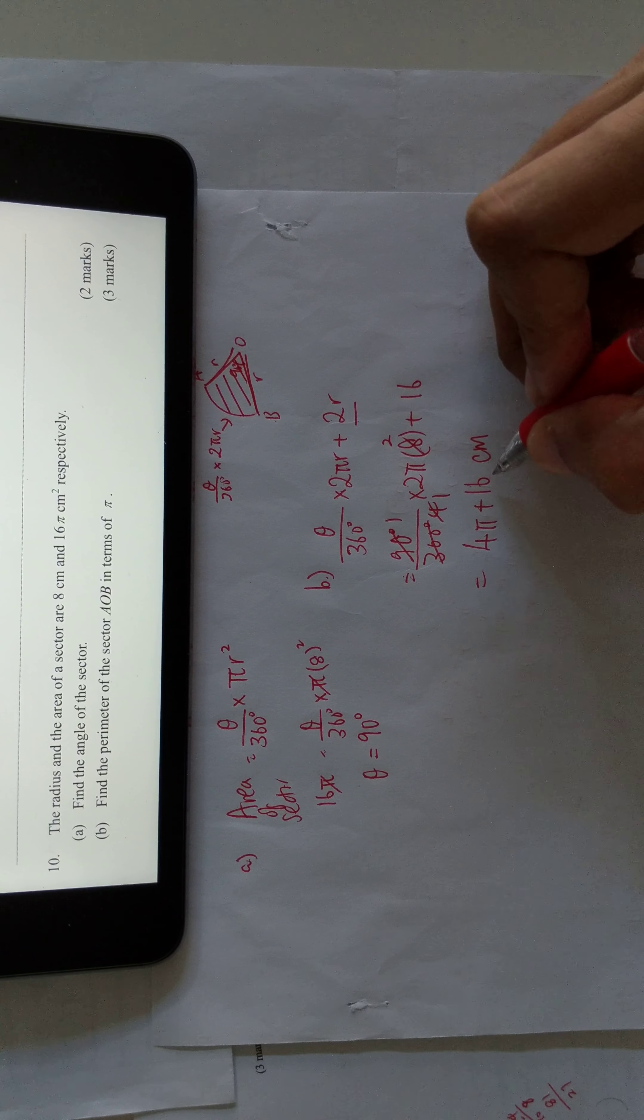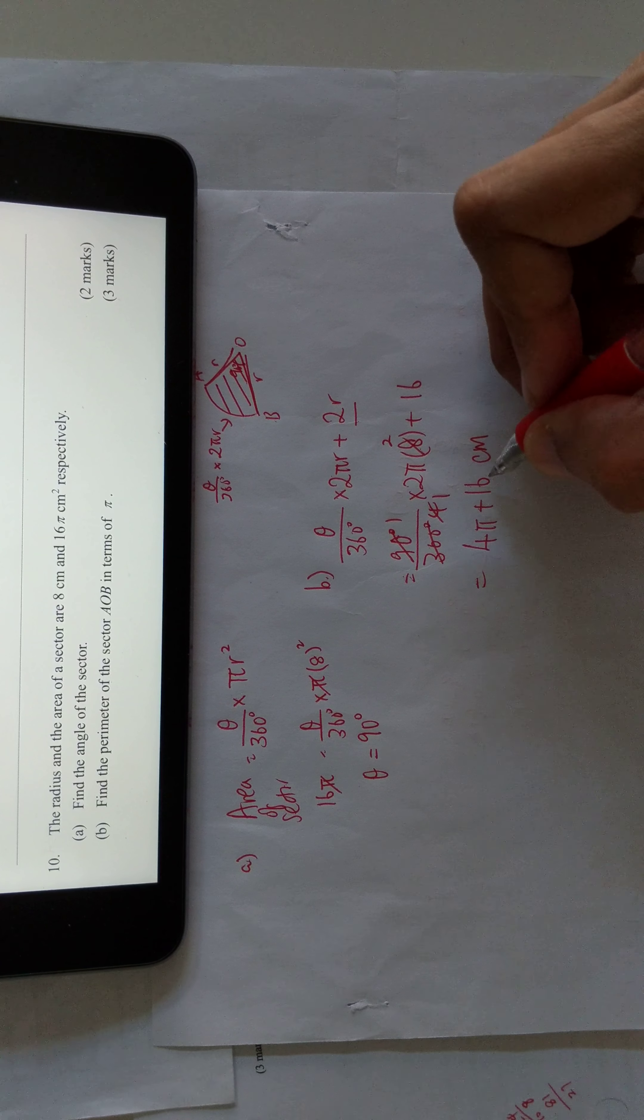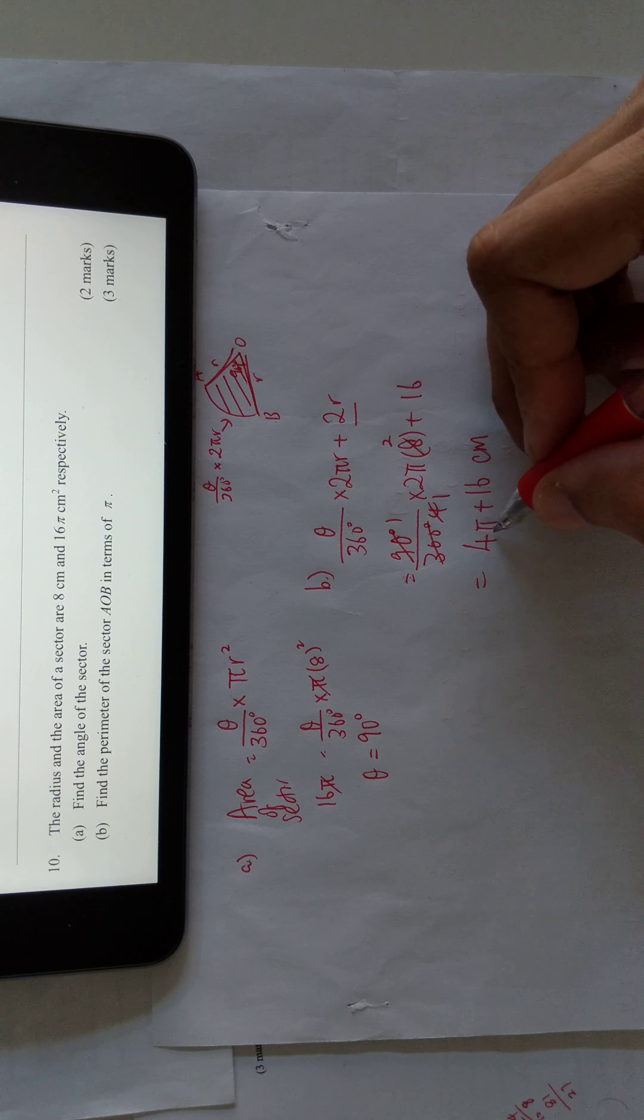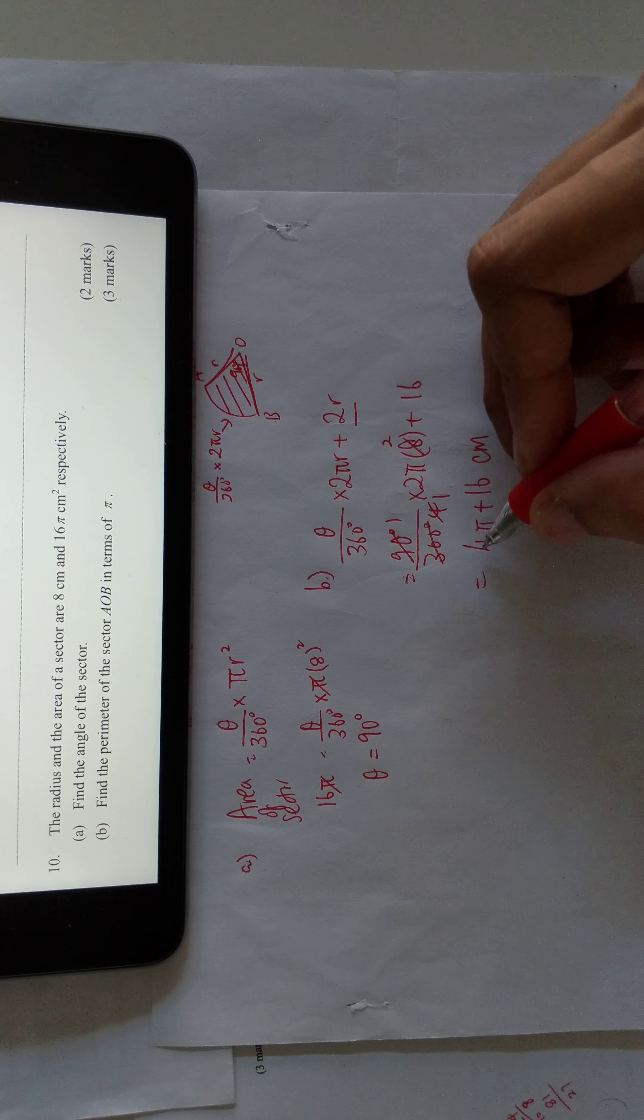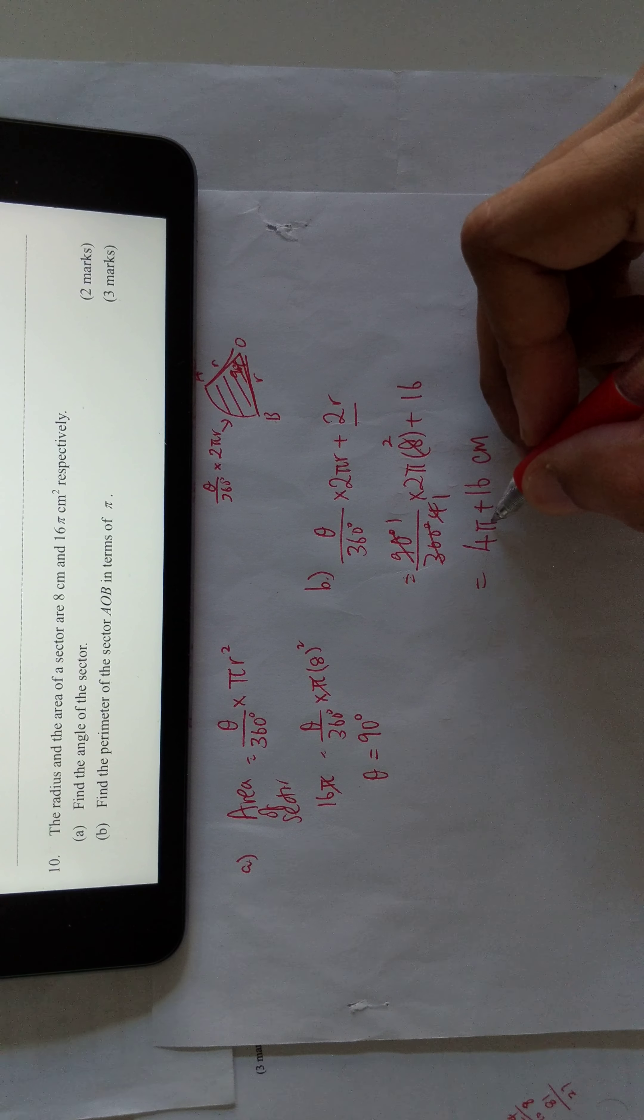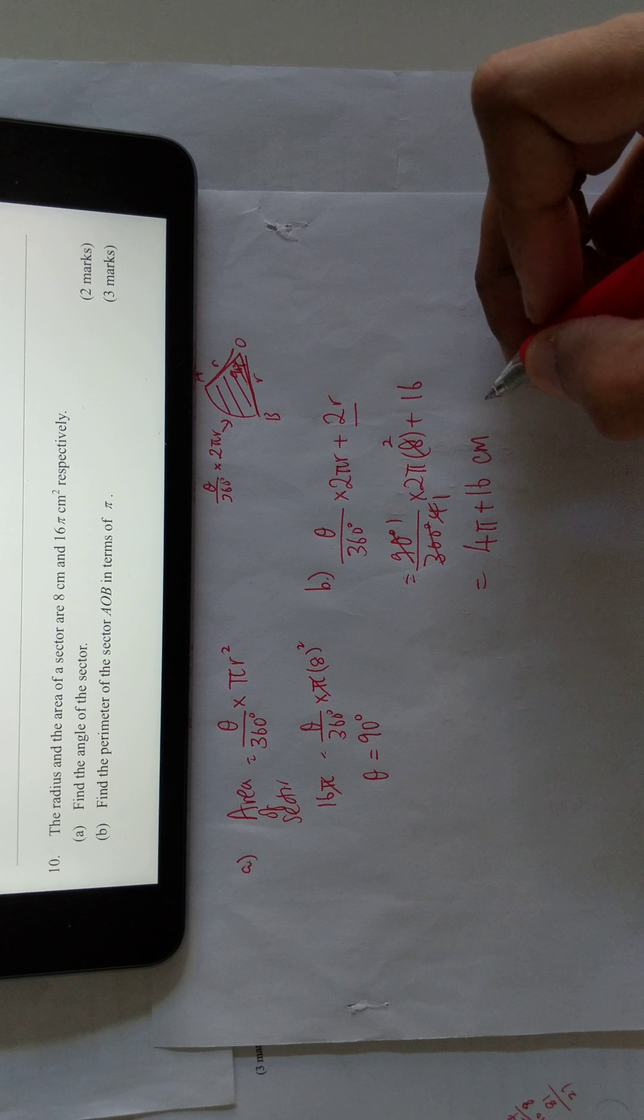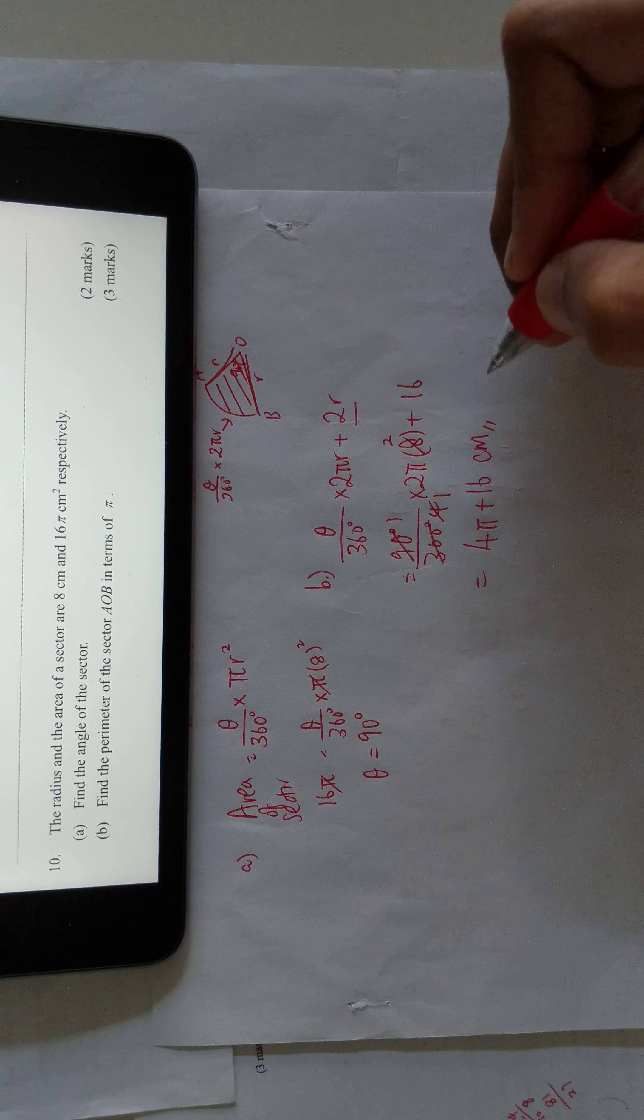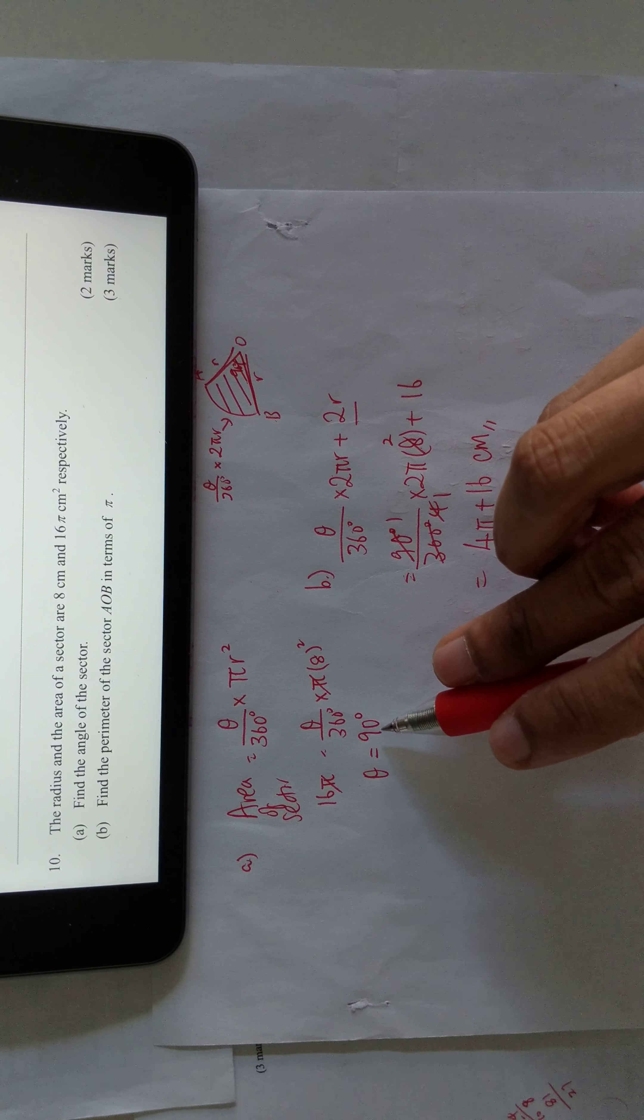Do not add them together. 4π is a number and 16 is a number, but we'll treat them separately. So 4π plus 16—leave 4π alone because 4 is multiplying by π, then add 16. The length, because it's perimeter, is in cm, and for the angle, don't forget the degree symbol.